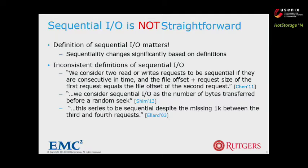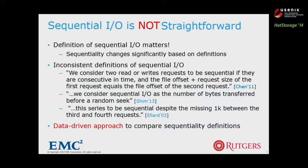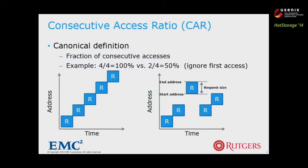Our work adopts a data-driven approach to analyze hundreds of storage traces to compare sequentiality definitions. Let us look at several sequential I/O properties that might affect the sequentiality metric. The canonical definition of sequentiality is the consecutive access ratio, which tracks the fraction of consecutive accesses.